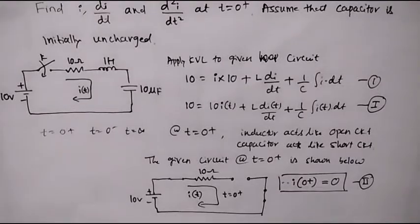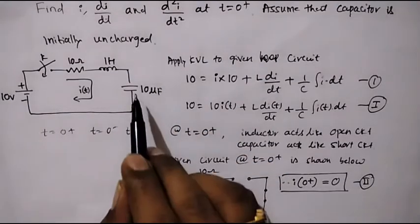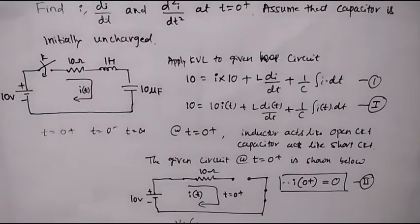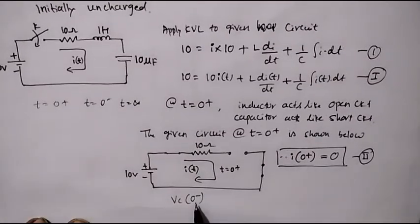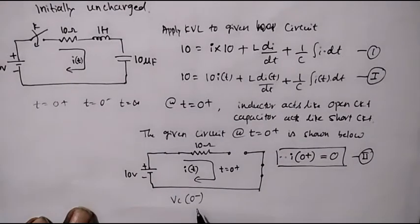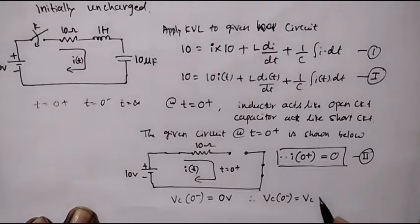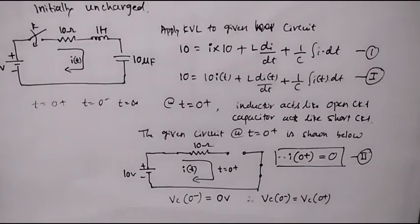In the problem, it is stated that the capacitor is initially uncharged. This means the voltage across the capacitor is initially 0, that is Vc of 0 minus equals 0 volts, since 0 minus is the time before closing the switch. We know that Vc of 0 minus is equal to Vc of 0 plus, meaning the voltage across the capacitor before closing the switch equals the voltage immediately after closing the switch.